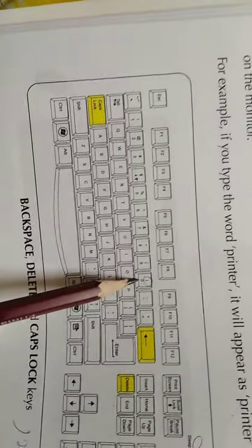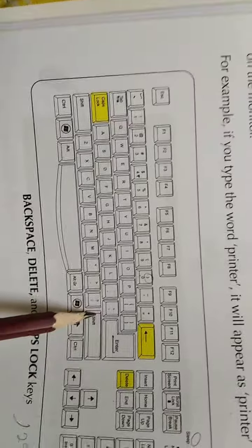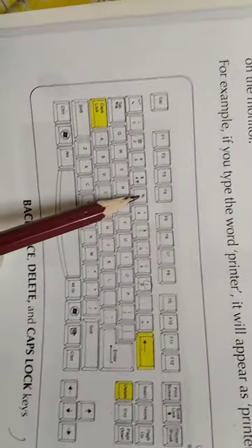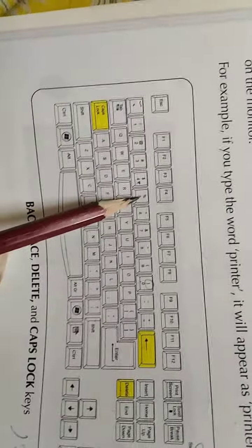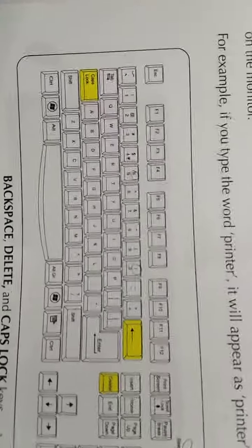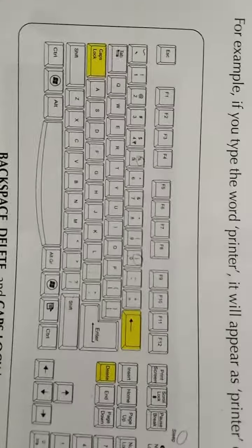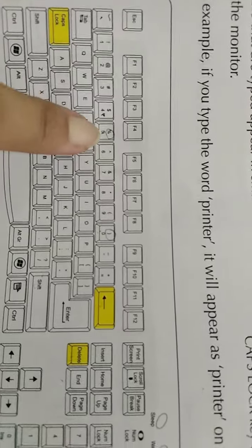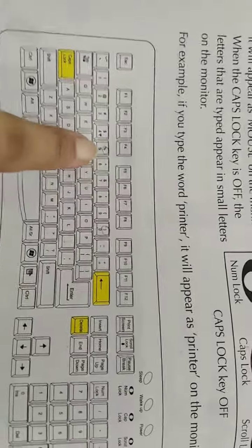For example, if you press Shift and press the '5' button, the percent sign (%) will be printed on the screen. If you press just the '5' button without Shift, it will print '5' on the screen.